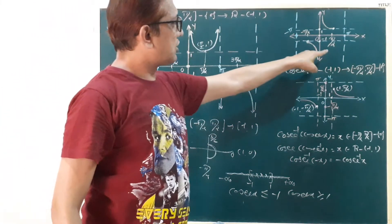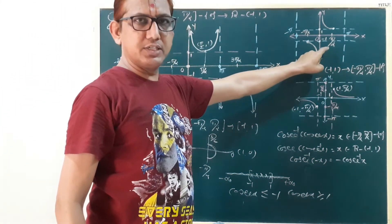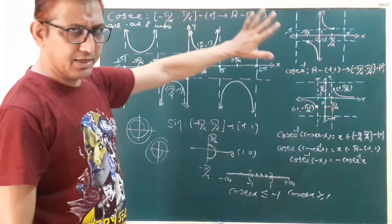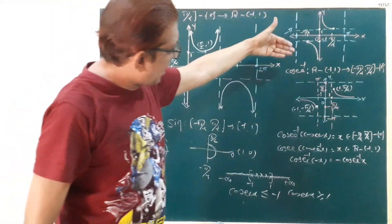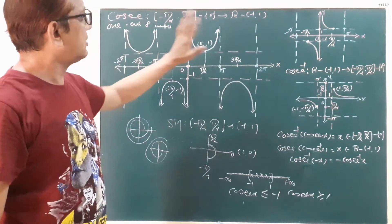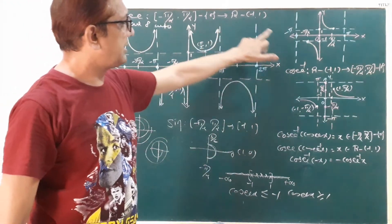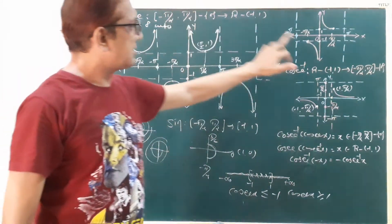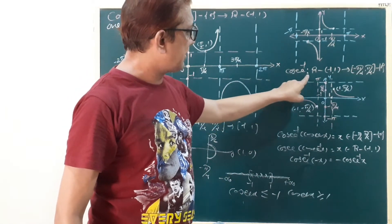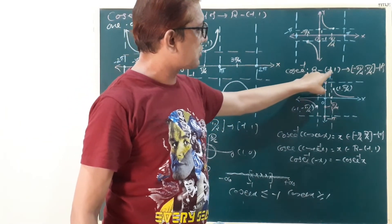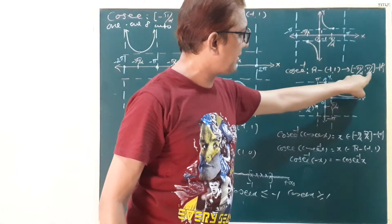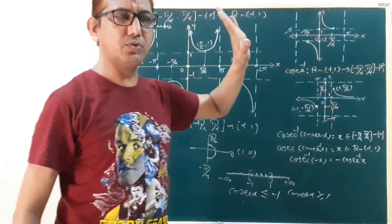This is your cosecant graph. Now we draw the cosecant inverse. We change the domain and co-domain: the co-domain becomes the domain and the domain becomes the co-domain. So cosecant inverse domain is ℝ minus the open interval minus 1 to 1, mapping to the closed interval minus pi by 2 to pi by 2, minus {0}.